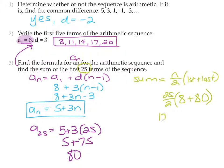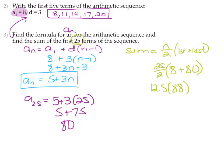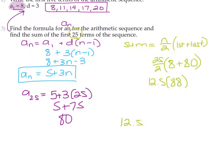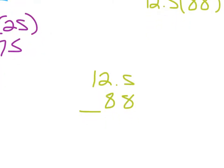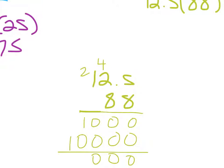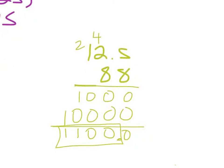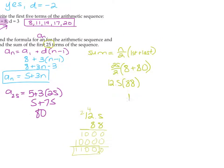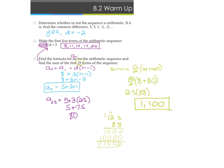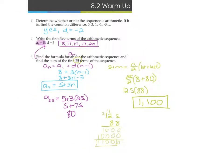So a 25 would be 5 plus 3 times 25, 5 plus 75, which is 80. So then I get 12.5 times 88. So the sum is 1,100 for the first 25 terms of the sequence.